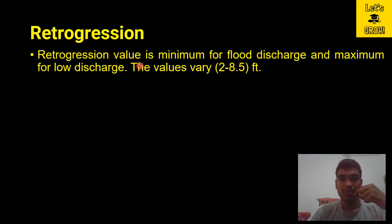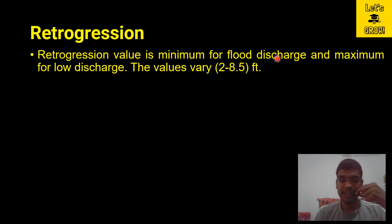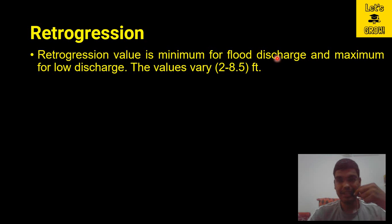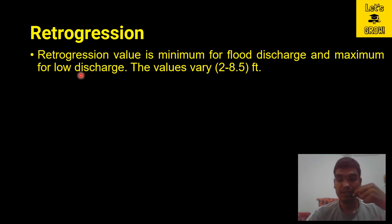The retrogression value is minimum for flood discharge and maximum for low discharge. Retrogression is minimum for flood discharge because whenever a flood discharge is passing, it carries a large amount of sediment and deposits it in the downstream, so there will be very little retrogression. But whenever low discharge is passing through the river, low discharge means less velocity, which means more deposition upstream of the weir, and the water overflowing the weir will have low silt — clean water.